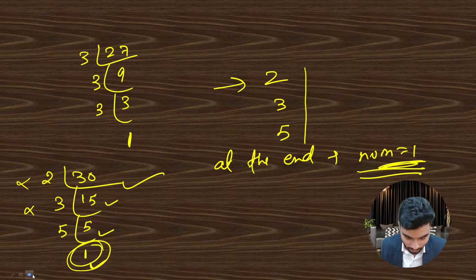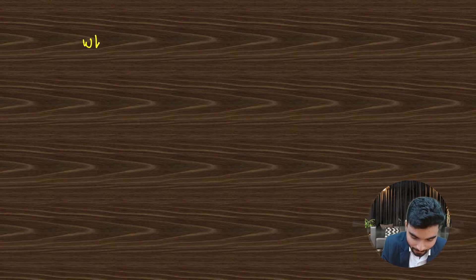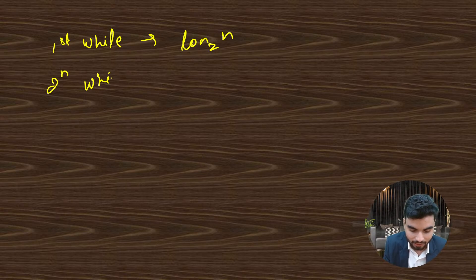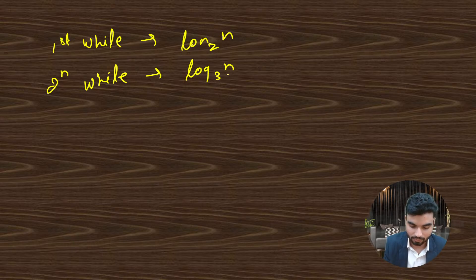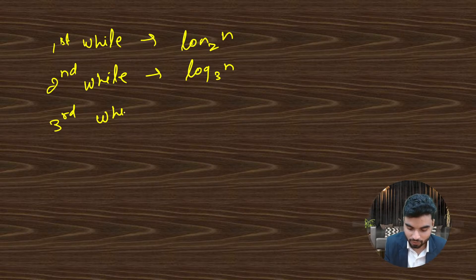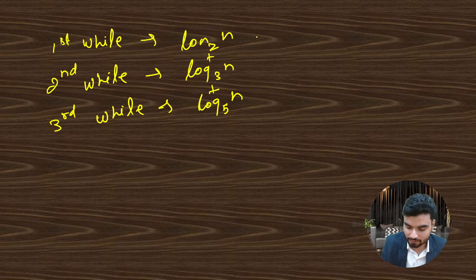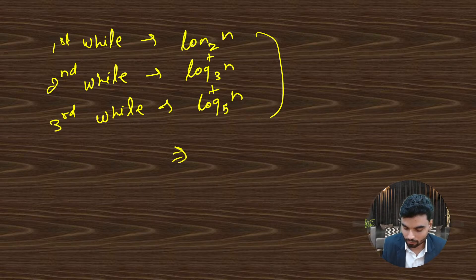On every step the input size is reducing. For the first while loop dividing by 2, time complexity is log base 2 of n — like binary search. For the second loop dividing by 3, it's log base 3 of n. For the third loop dividing by 5, it's log base 5 of n. Adding them, we take the maximum, which is log n overall — logarithmic time complexity.